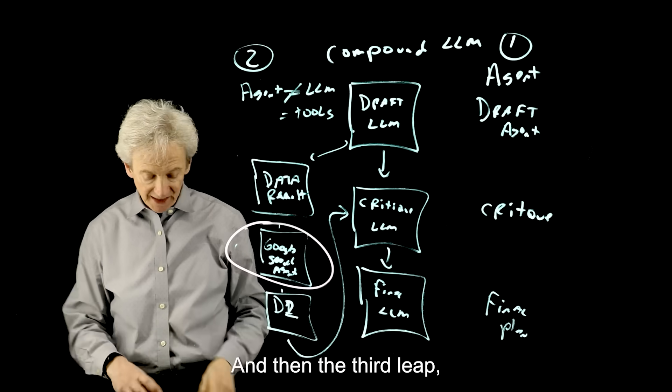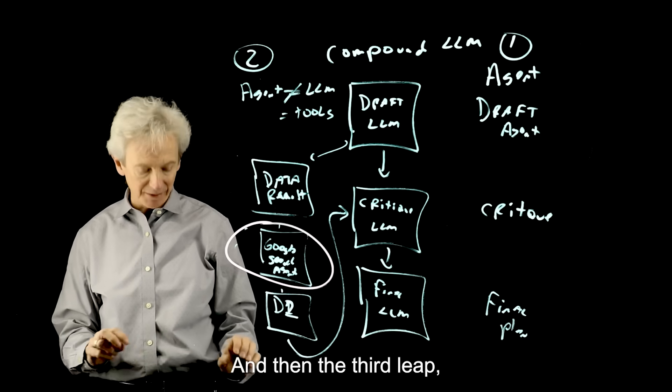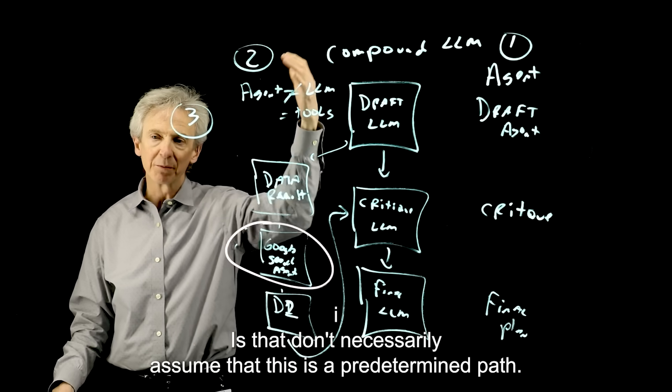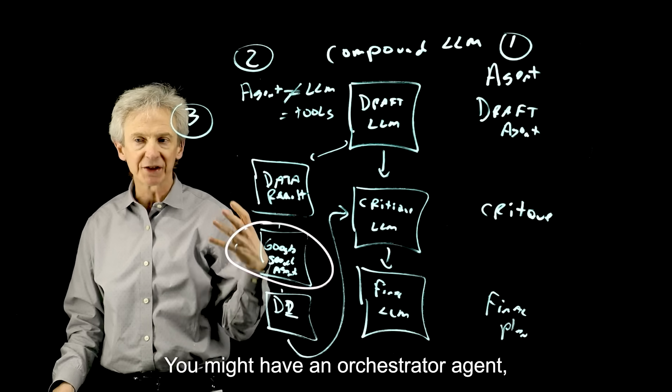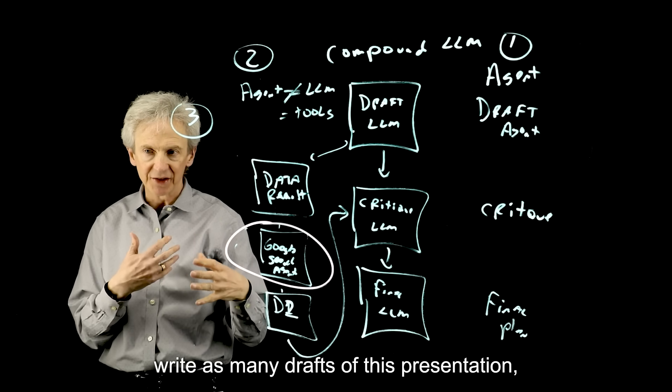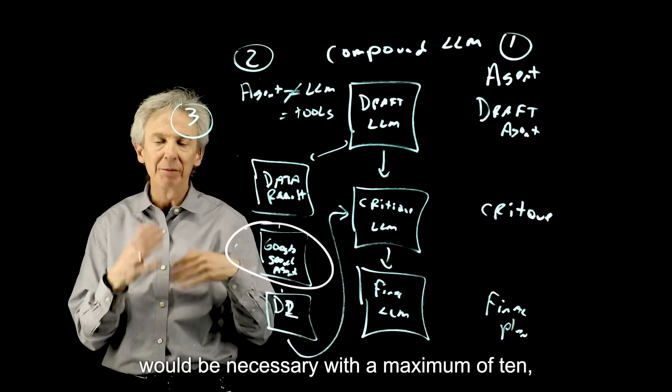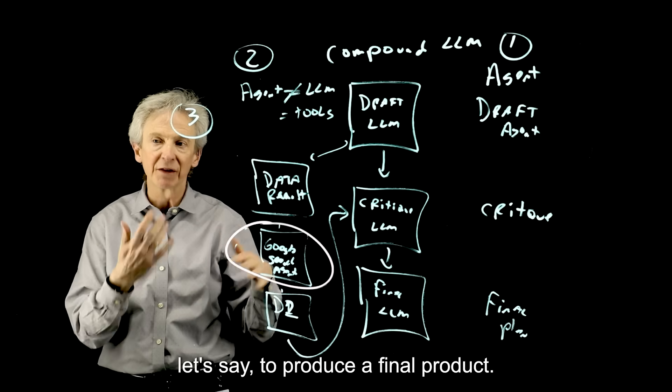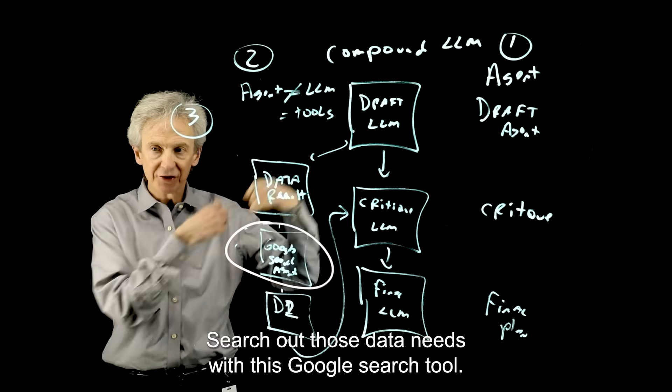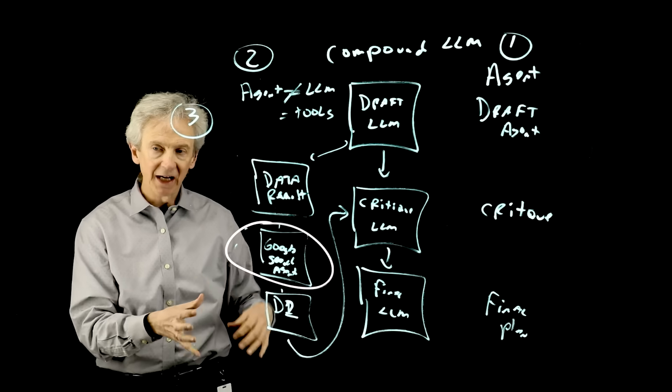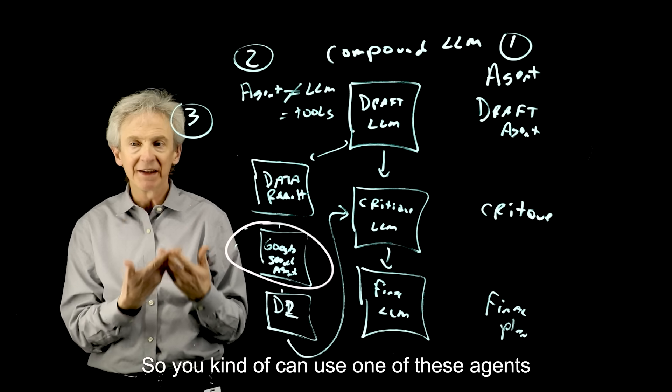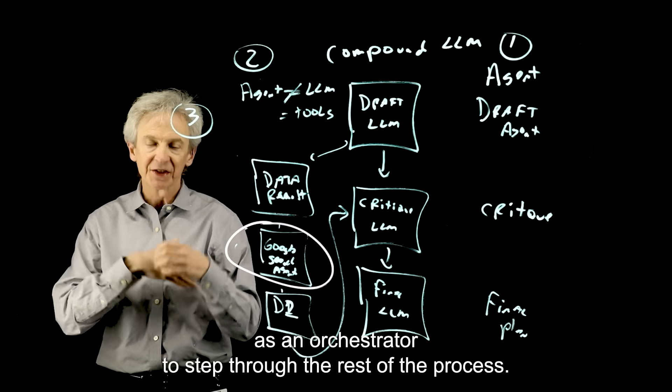And then the third leap, I'll just write a three right here and then I'll just explain it verbally, is that don't necessarily assume that this is a predetermined path. You might have an orchestrator agent that you tell it, hey, write as many drafts of this presentation, do as many draft loops as you think would be necessary, with a maximum of 10, let's say, to produce a final product. Or after each draft, ask for data needs, search out those data needs with this Google search tool, and then write another final draft and do that until you have no more data needs.